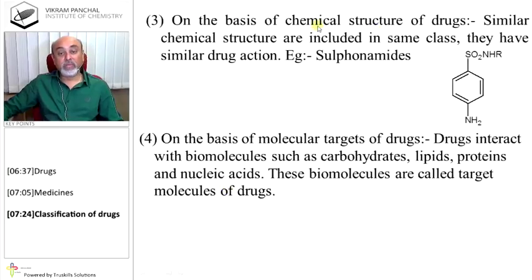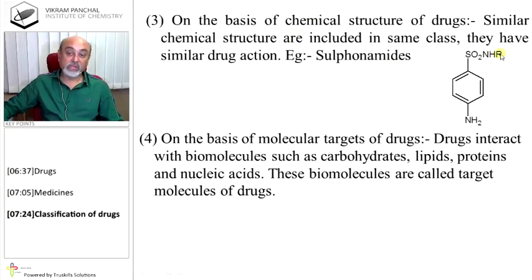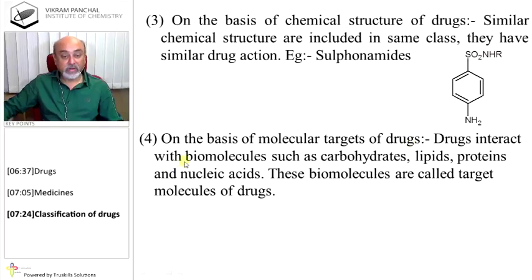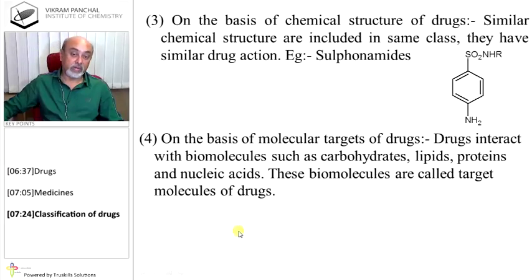On the basis of chemical structure of drugs — similar chemical structures are included in the same class and they have similar drug action. For example, sulfonamides, where you can change the R group — these are all sulfa drugs. On the basis of molecular targets of drugs — drugs interact with biomolecules such as carbohydrates, lipids, proteins, and nucleic acids. These biomolecules are called target molecules of drugs.